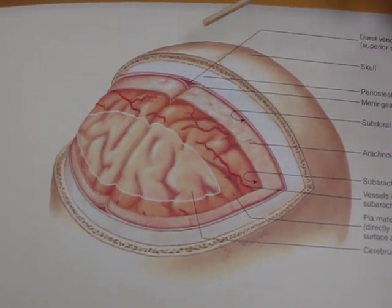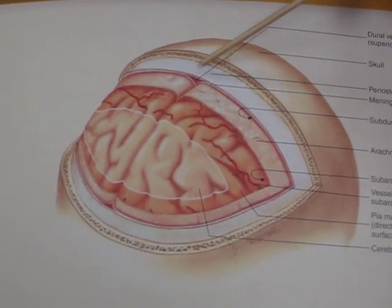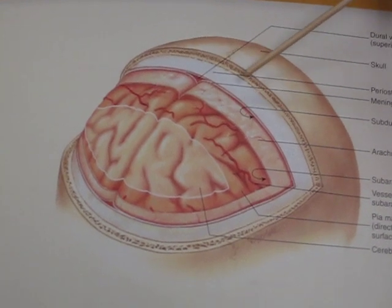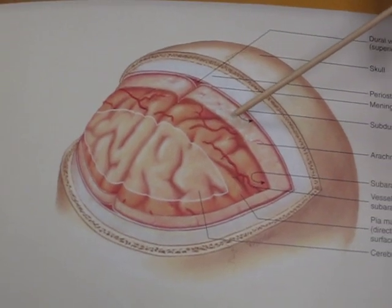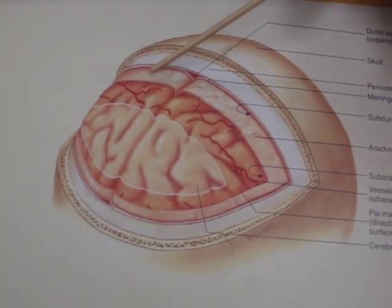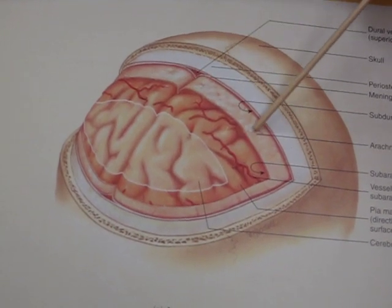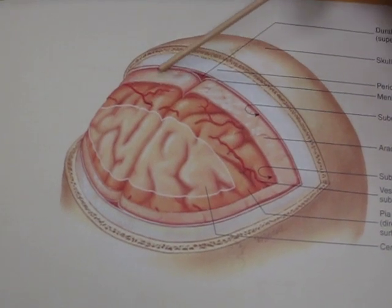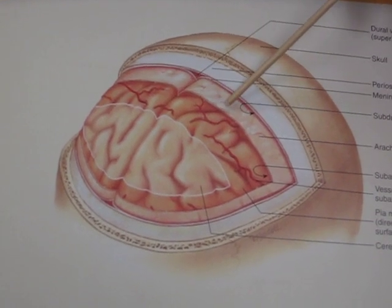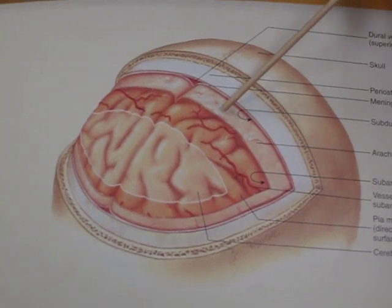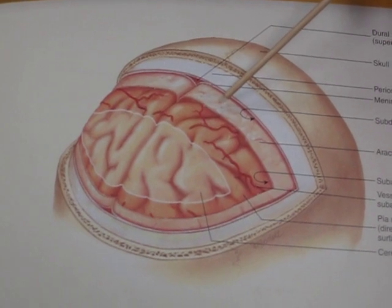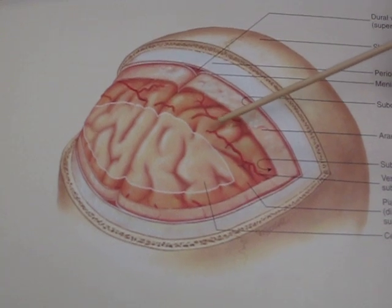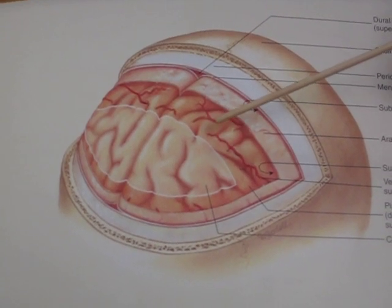The first covering that you see here, this white covering, is called the dura mater. The next covering down is called the arachnoid membrane — it's named after the spider, because if you get a closer look it actually looks like spider webs. That's why it's called the arachnoid membrane. The next membrane down is called the pia mater, and that covers the cerebrum.